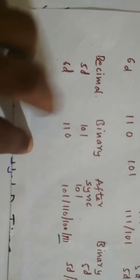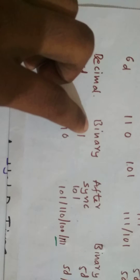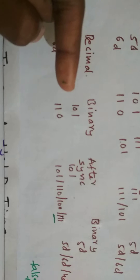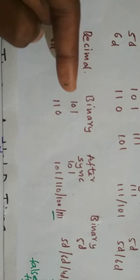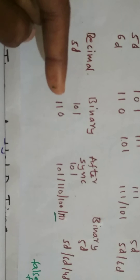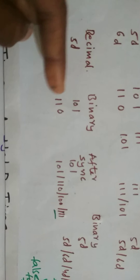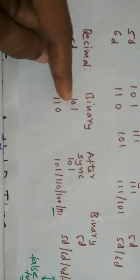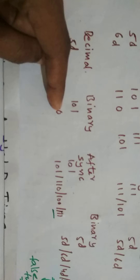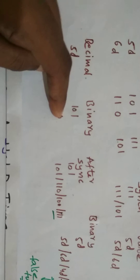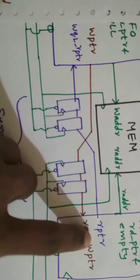If we use binary code, what are the problems? Let us consider this. This is a binary code 101 which we are getting. That means the pointer is at the 5th position. Now we need to increment it to the 6th position. When we have incremented it to the 6th position, as we can see, two bits are changing: 1 to 0, and 0 to 1. So, after synchronization, we will get different possible values.